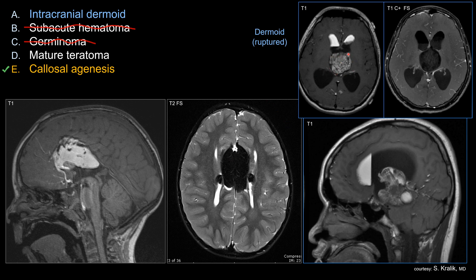For intracranial dermoid, you can see a fatty lesion with T1 shortening — bright T1 signal — with subsequent signal drop after fat saturation. Compared to the relatively homogeneous signal of a lipoma, dermoids tend to be much more heterogeneous in signal intensity. In this case, you can also see a non-dependent layer of the fat element — fat floating to the top — indicating a ruptured dermoid. Dermoids tend to be much more heterogeneous and typically do not contain as much fat tissue as a lipoma.